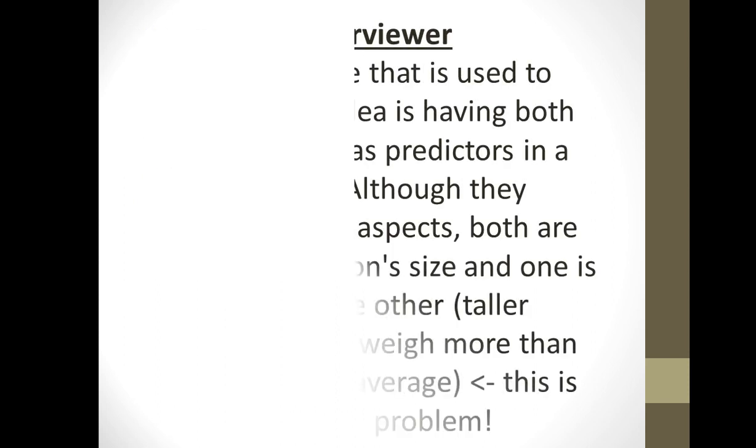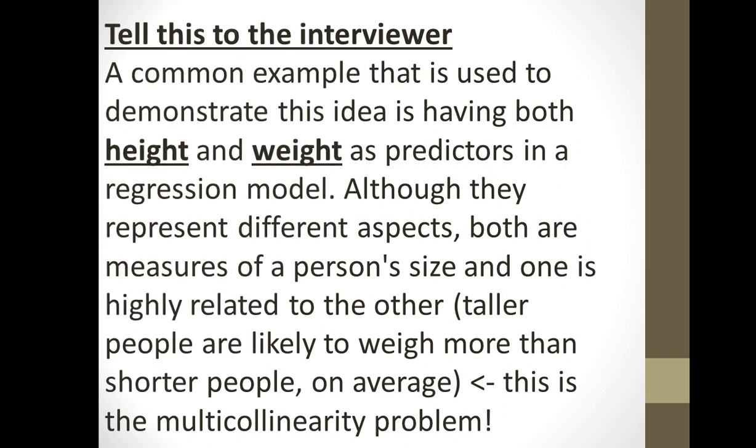Say you have height and weight as predictors in the regression model. Although they represent different aspects, both are person sizes. By different aspects I mean height is measured in inches or centimeters but weight is measured in kilograms or pounds.